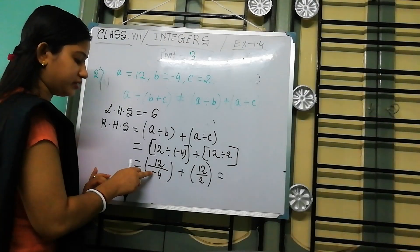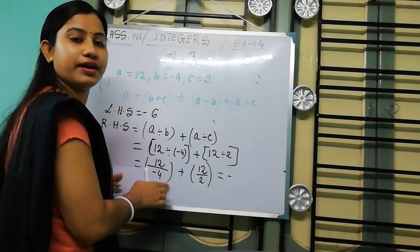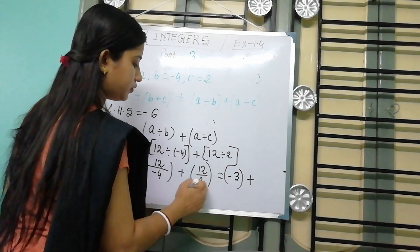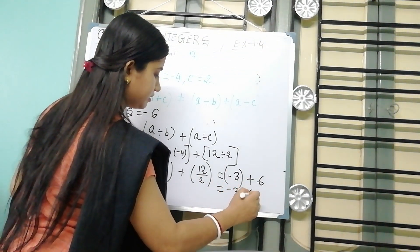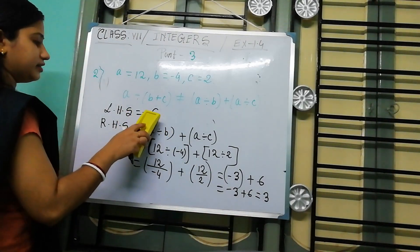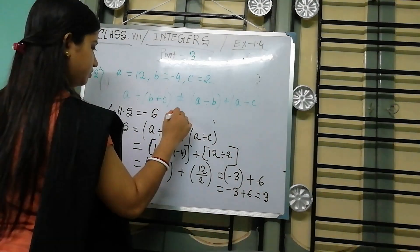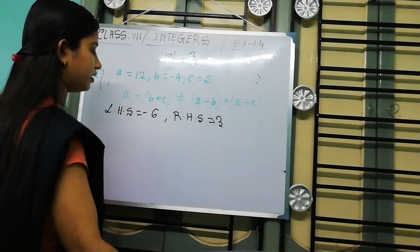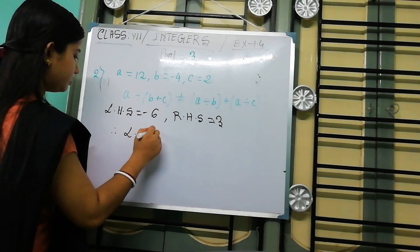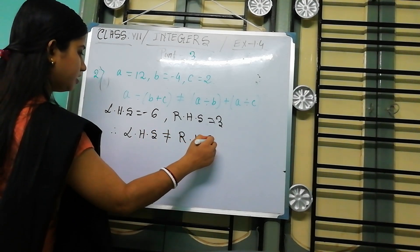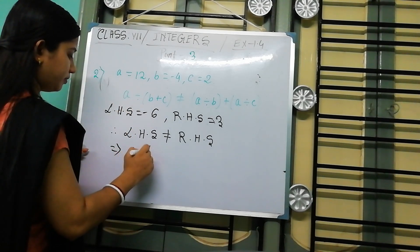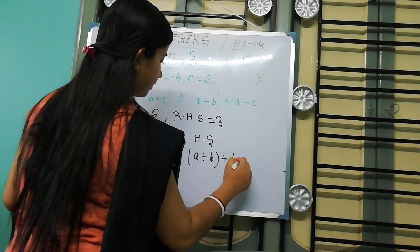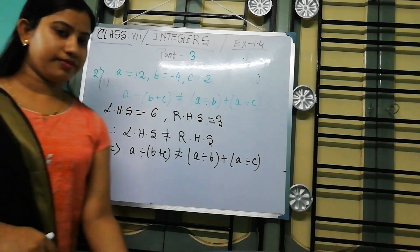So 12 divided by minus 4 gives minus 3, because 3 into 4 is 12, and the sign is minus. Then minus 3 plus 12 by 2, which is 6. So minus 3 plus 6 equals 3. Now we get LHS equals minus 6 and RHS equals 3. Therefore LHS is not equal to RHS, that is A divided by (B plus C) is not equal to A divided by B plus A divided by C. So we verify this equation.